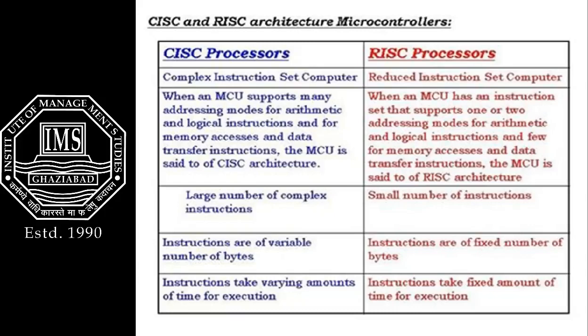A large number of complex instructions support CISC, while a small number of instructions support RISC. In CISC, instructions are of a variable number of bytes, whereas in RISC instructions are of a fixed number of bytes. In CISC, instructions take a varying amount of time for execution, whereas in RISC instructions take a fixed amount of time for execution.